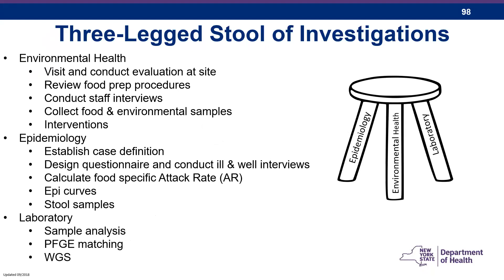The typical way that we investigate these outbreaks is what we call the three-legged stool approach. It involves more than just one program, more than one department, more than one agency. It involves environmental health, epidemiology, and laboratory. Each office performs something a little different; however, some may perform more than one thing. Environmental health staff may be interviewing people, running statistics, evaluating food service establishments, reviewing food procedures, conducting staff interviews, collecting food environmental samples, and implementing interventions. Epidemiology develops questionnaires, looks at statistics, and collects stool specimens. And our laboratory side used to focus on PFGE analysis — now we're using whole genome sequencing.